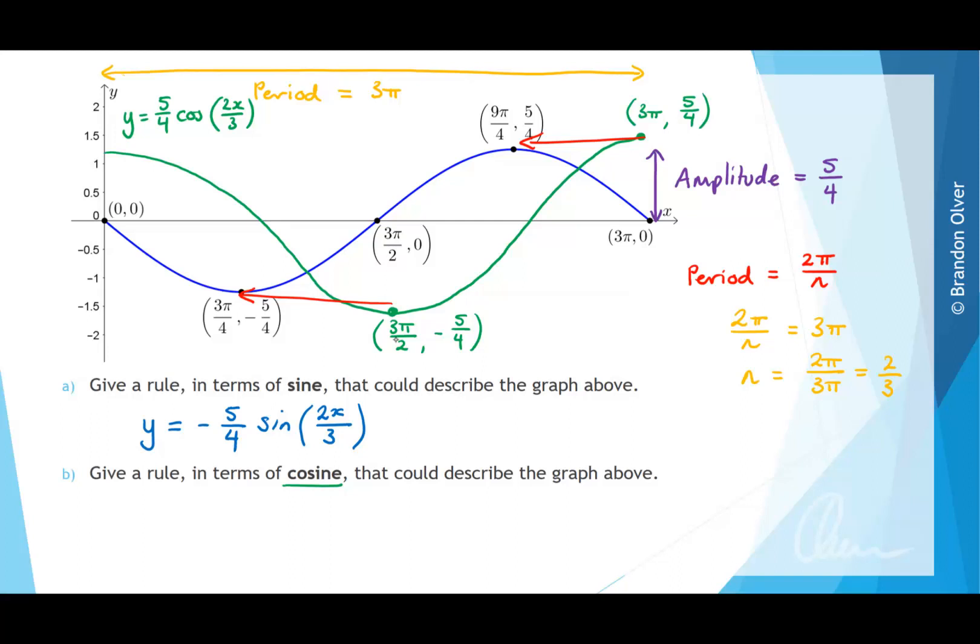So this 3 pi on 2, which is at the minimum, if we have a look at that, that could be written as 6 pi on 4. And we want to change every x value so that instead of being 6 pi on 4, where the minimum occurs, we want the minimum to be at 3 pi on 4. So that's equivalent to a difference of 3 pi on 4.